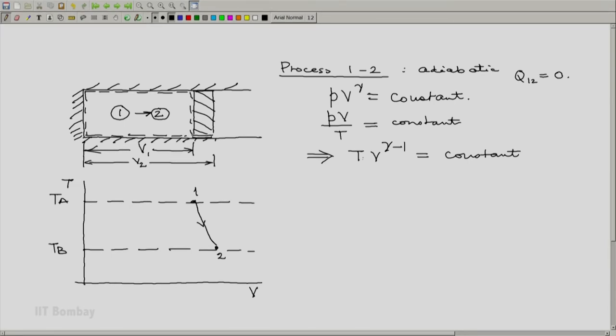But since this is true throughout this process, we are going to get an important relation: T1 V1 raised to gamma minus 1 equals T2 V2 raised to gamma minus 1. We will use this expression later.